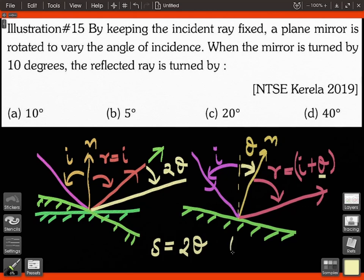Since the mirror was turned by theta equal to 10 degrees, the deviation of the reflected ray would be 20 degrees. Thanks a lot.